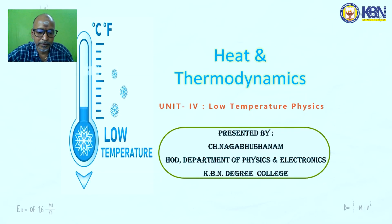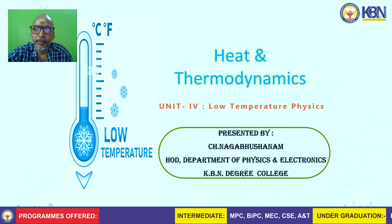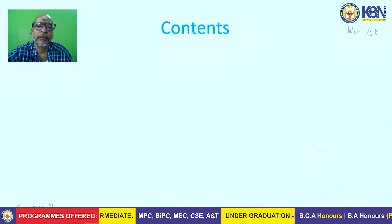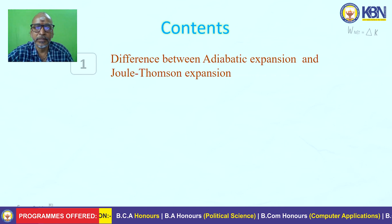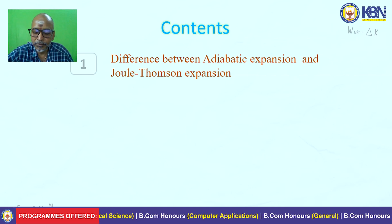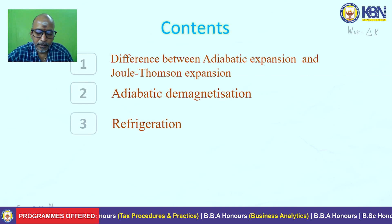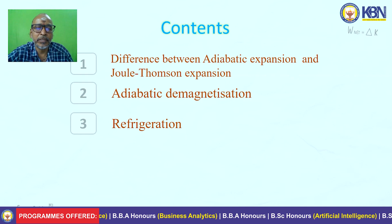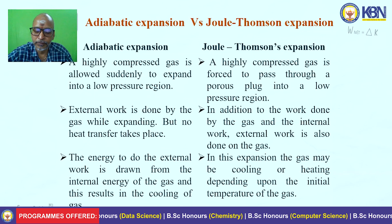This is a unit on heat and thermodynamics, a low temperature physics topic. In this class, we will mainly discuss the main difference between adiabatic and Joule-Thomson (Joule-Kelvin) expansion, how low temperature is created by the phenomenon of adiabatic demagnetization, how the refrigerator works, and the applications of materials at low temperatures.